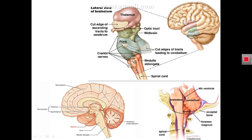Superiorly, the midbrain is continuous with the cerebrum, and specifically the midbrain continues above with the diencephalon, which is formed of the thalamus, subthalamus, and other parts of the diencephalon.